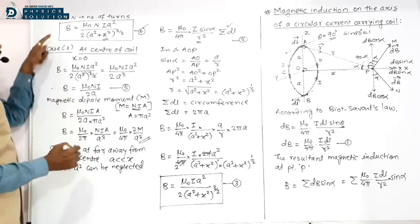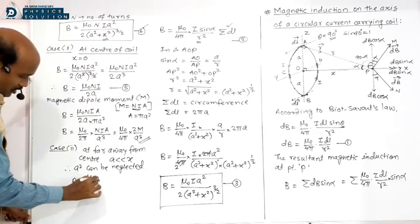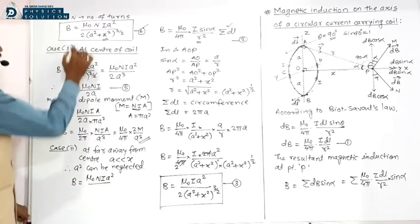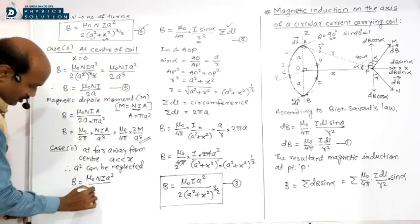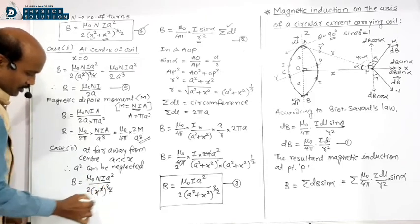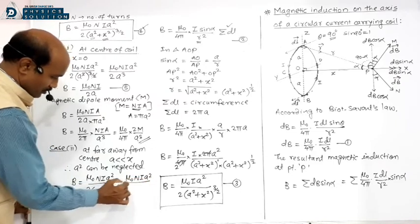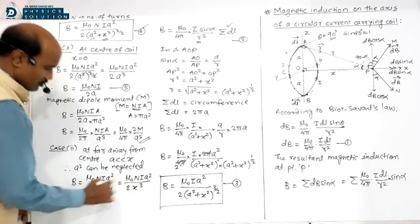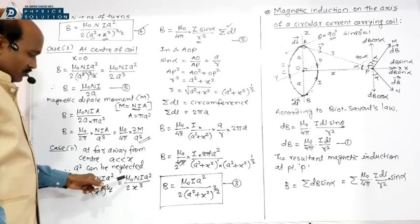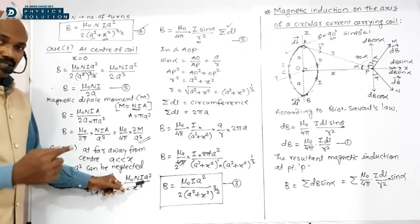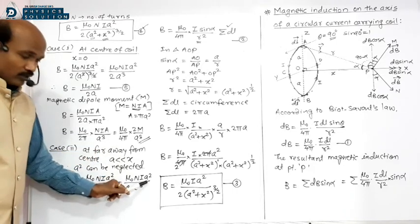With a² neglected, the formula becomes: B = (μ₀ N I a²) / [2 x³] — since (x²)^(3/2) = x³ and the 2 from the power cancels appropriately. So B = μ₀ N I a² / (2x³).